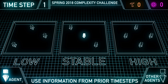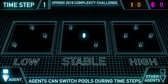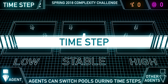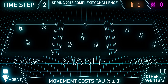In particular, each agent must make their choice knowing only the number of agents that located at each pool and each pool's payoff for all prior time steps. Agents are allowed to switch pools at the start of any time step, but to do so costs the agent a payment of tau, where tau is greater than or equal to zero.